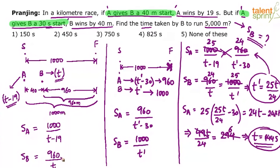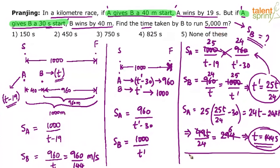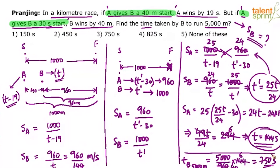Now substitute T = 144 into the speed of B equation: speed of B equals 960 divided by 144 meters per second. Time taken by B to cover 5000 meters equals distance divided by speed: 5000 divided by (960/144) equals 5000 times 144 divided by 960, which equals 750 seconds. The answer is option 3, 750 seconds.